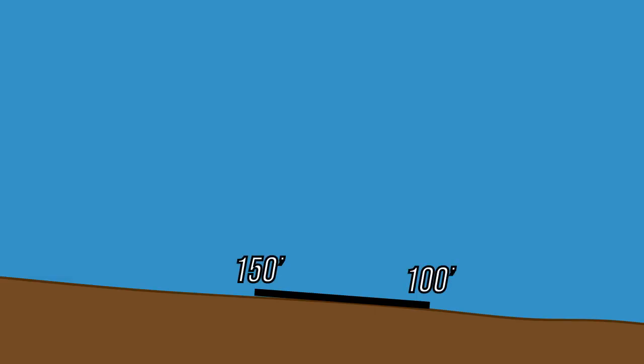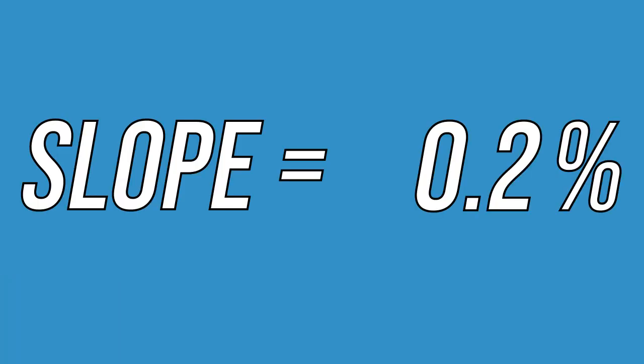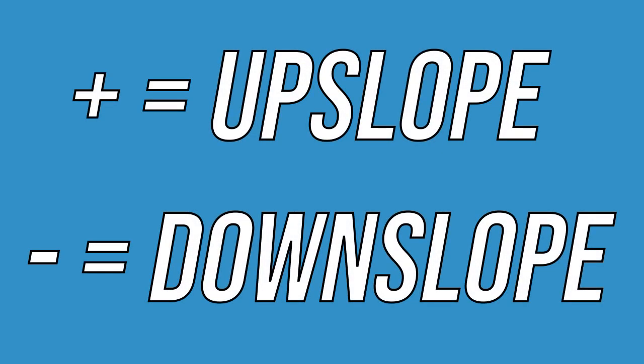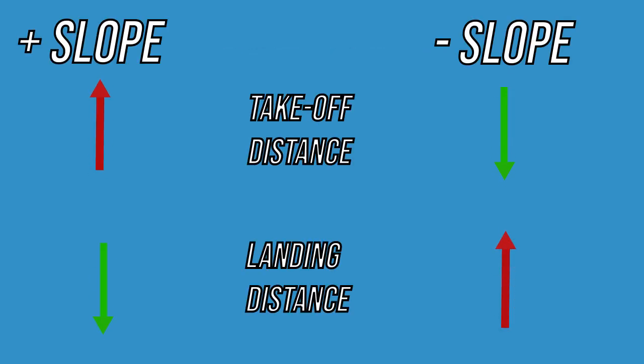Runway slope is the difference in elevation between the runway thresholds expressed in a percentage. It may be either positive or negative depending on the slope of the runway. Runway slope has a very important impact on the performance of the aircraft, as it affects the aircraft takeoff and landing distances.